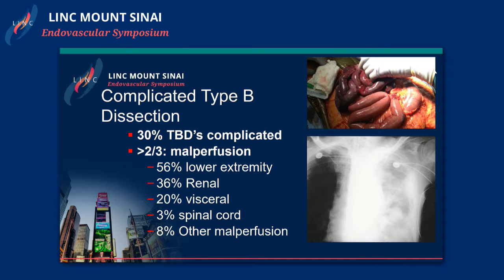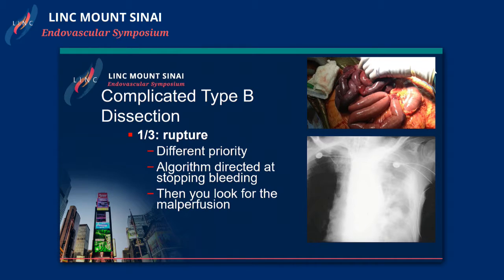In complicated acute dissections with malperfusion, about 56% will have lower extremity ischemia, 36% will show renal ischemia, 20% visceral, and others with spinal and minor ischemias. A third will present with rupture — a different priority where we try to stop the bleeding first and then address malperfusion.